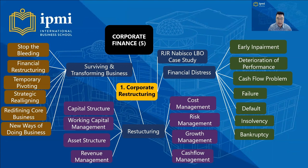Part five covers corporate restructuring. Financial distress follows a flow: early impairment, deterioration of performance, cash flow problems, failure, default, insolvency, and bankruptcy. Surviving and transforming businesses involves stopping the bleeding, financial restructuring, temporary pivoting, strategic re-aligning, re-defining core business, and new ways of doing business. Restructuring methods include capital structure, working capital management, asset structure, revenue management, cost management, risk, growth, and cash flow management. We also discuss the RJR Nabisco leveraged buyout (LBO) case study.